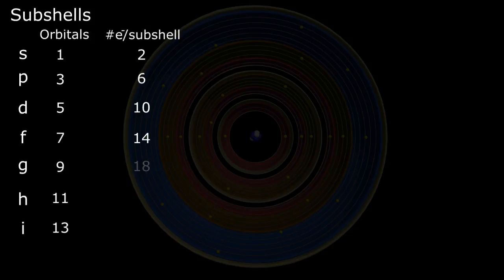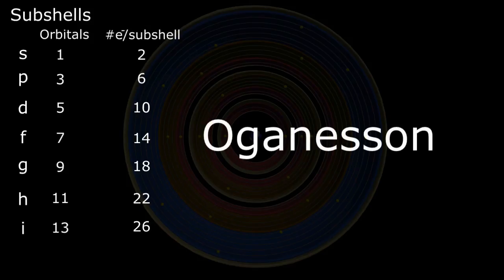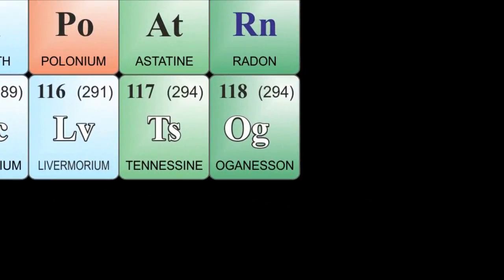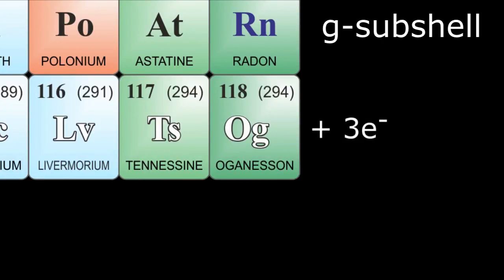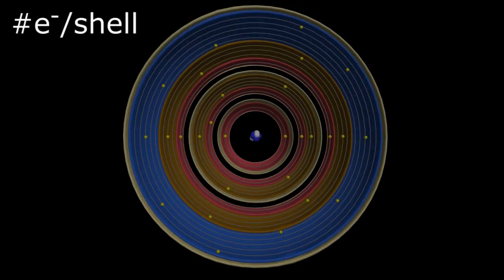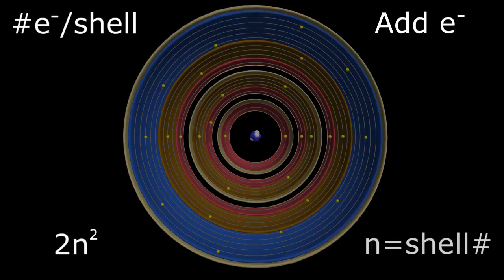G, H, and I orbitals would contain 18, 22, and 26 electrons respectively, but would only be necessary for theoretic elements above the heaviest element currently on the periodic table, oganesson, a synthetically created unstable element with an atomic number of 118. The first element that would need the G subshell has an atomic number of 121. This theoretic element, called unbiunium, with a chemical symbol UBU, is, as far as we know, way too unstable to actually exist.